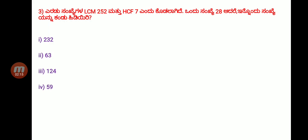GCF is 7. That's why 7 is divided by both numbers. Now, 28 is divisible by 7. So that's verified. Now look — for 4 options, the two numbers have LCM 252.